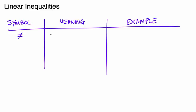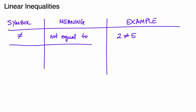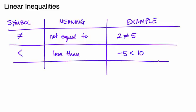So the first one is an equal sign with a little line through it, and that means not equal to. Our example would be something like 2 does not equal 5. Our next symbol looks like this, and that is the less than symbol. For example, negative 5 is less than 10. A symbol similar is the greater than symbol. And an example might be 3 is greater than 1.